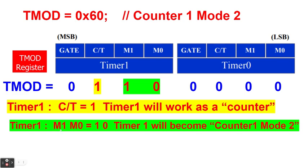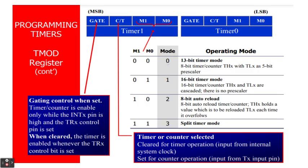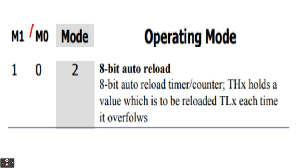When the timer 1's M1 M0 is 1, 0, it means that the timer 1 will become counter 1, mode 2. And this 1, 0 means mode 2. So in other words, 0x60 is counter 1, mode 2. The modes, we have 4 modes: mode 0, mode 1, mode 2, and mode 3. We will focus ourselves on the mode 2, which is an 8-bit auto-reload.